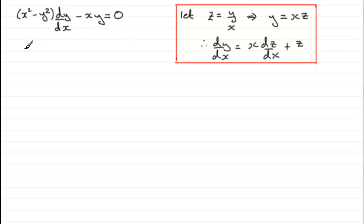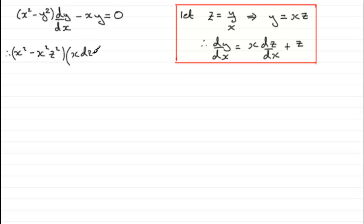For the first bracket we have x² minus y². But y = xz, so y² = x²z², giving x² minus x²z². Multiplying by dy/dx — which is x·dz/dx + z — gives (x² − x²z²)(x·dz/dx + z). Then we have minus xy, which is minus x times xz, equal to zero.